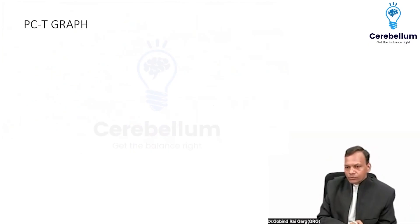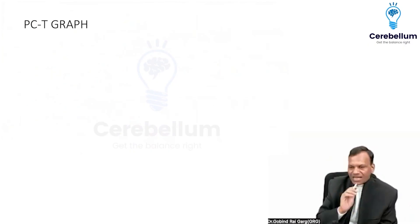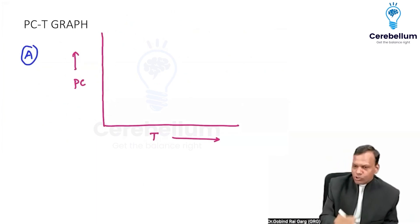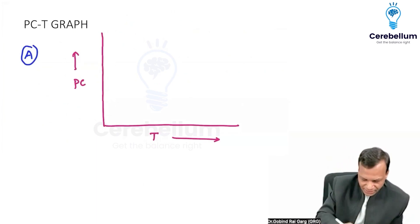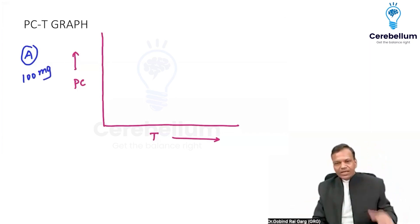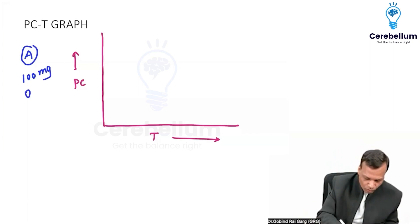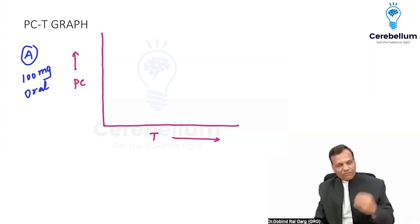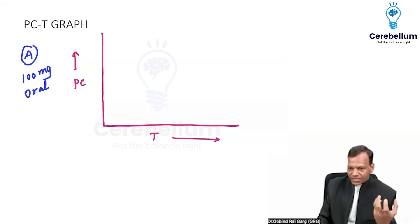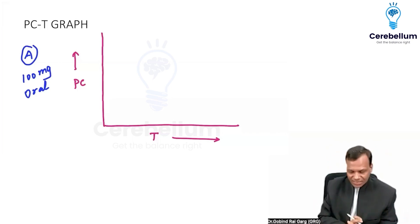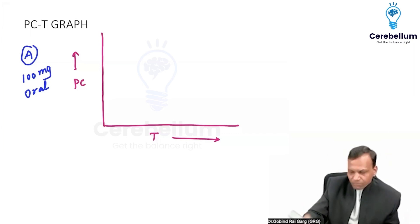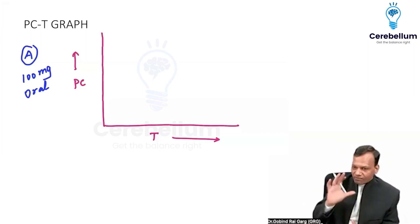Now, related to the plasma concentration time graph. Suppose we give drug A, 100 milligram, orally. After every half an hour, we measure the plasma concentration. And then we plot a graph to see which type of graph comes.